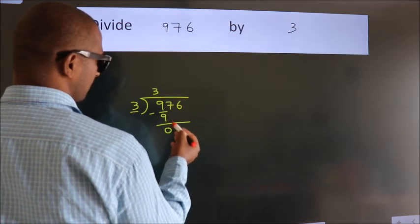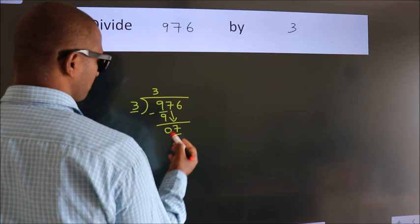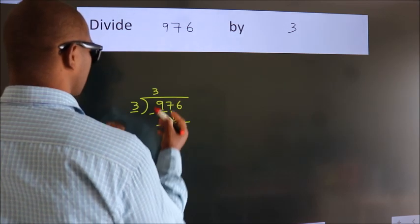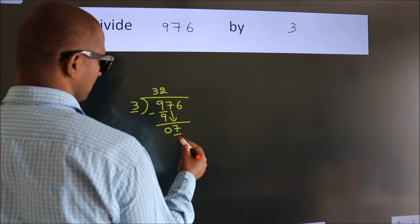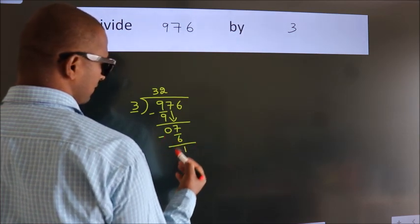After this, bring down the beside number. So, 7 down. A number close to 7 in 3 table is 3 times 2 is 6. Now, we should subtract. We get 1.